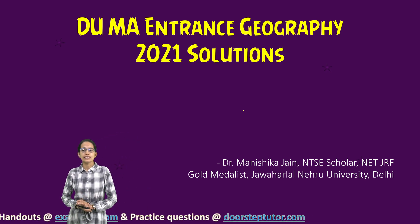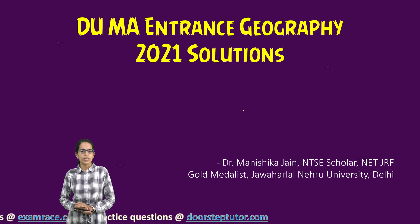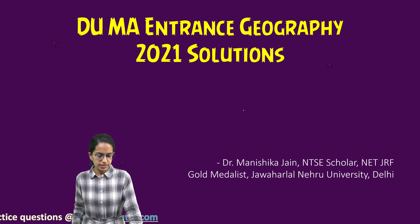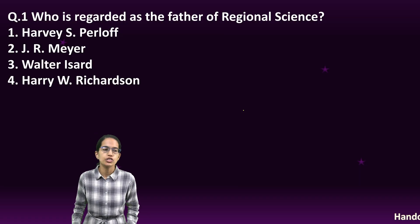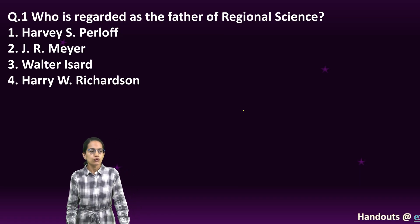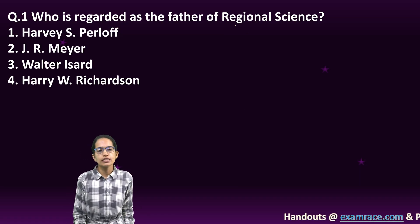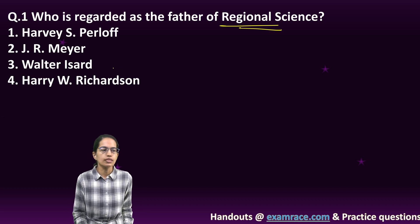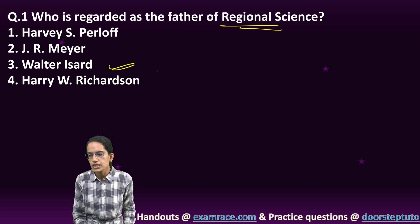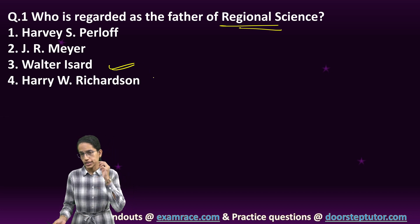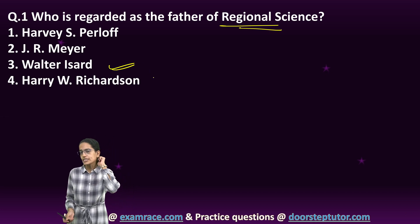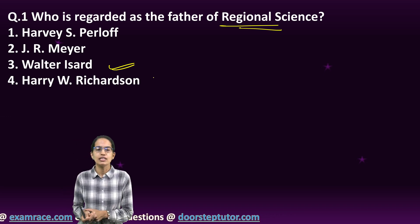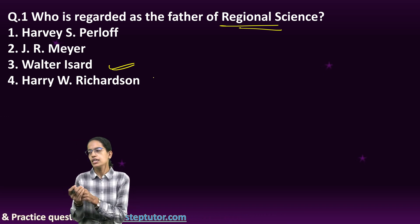Welcome. Let's discuss some of the important questions from Delhi University MA entrance examination for JNU. One of the questions was: who is the father of regional science? The answer is Walter Isard. These are kind of direct questions. Walter Isard was an American economist and has been named as the father of regional science.